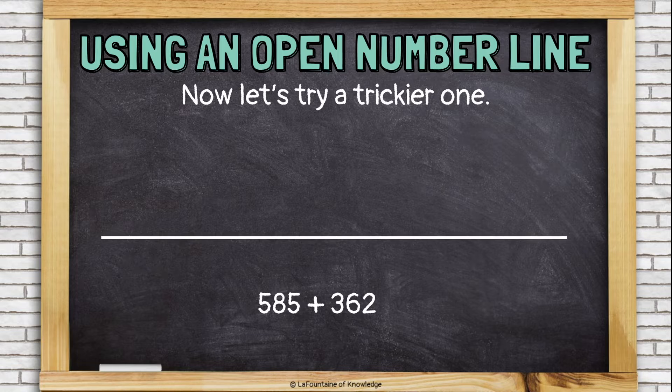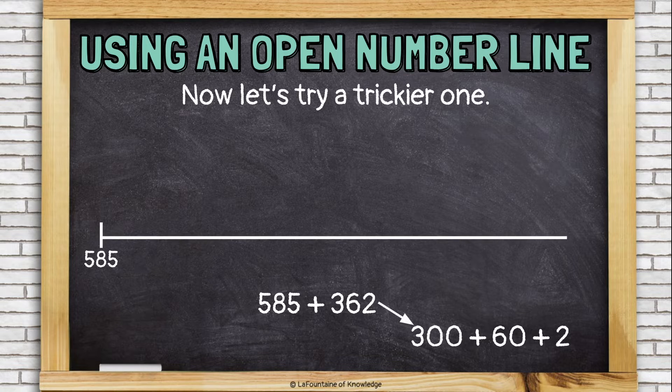Let's try a trickier one. Once again, I'll start at the larger number, 585. And I'll break the smaller number, 362, into chunks that are easy to add. Let's try expanded form again, 300 plus 60 plus 2.